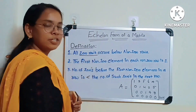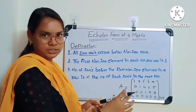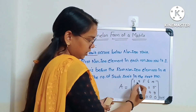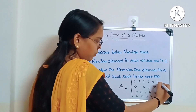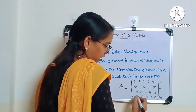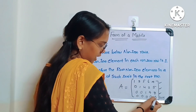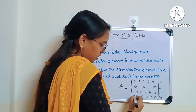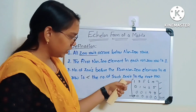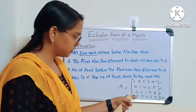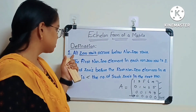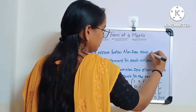A row which has all zero elements is called a zero row. If you see this matrix, the first three rows have elements other than zero — row 1, row 2, and row 3 are non-zero rows. The last row has all zero elements, so it is a zero row. Since this zero row appears below the non-zero rows, the first condition is satisfied.